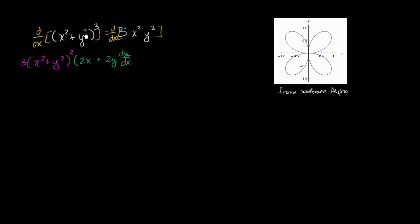Plus the derivative of y² with respect to y, which is 2y, times the derivative of y with respect to x — we're applying the chain rule right over here. That is going to be equal to what we have on the right-hand side. We have 5 times x² times y², and we can take the 5 out, since the derivative of 5 times something is the same as 5 times the derivative.